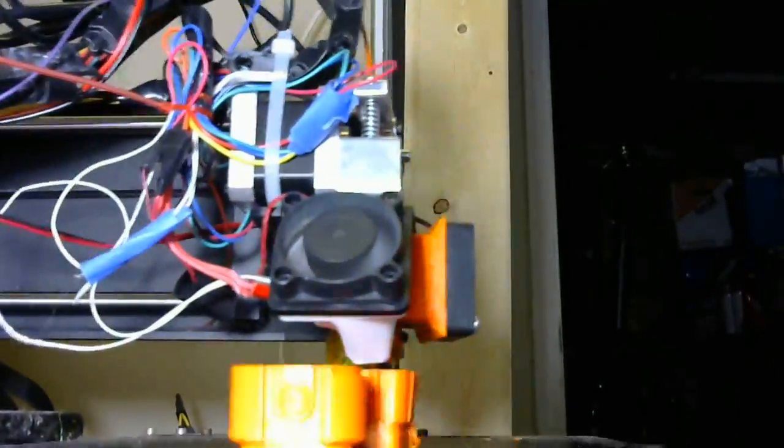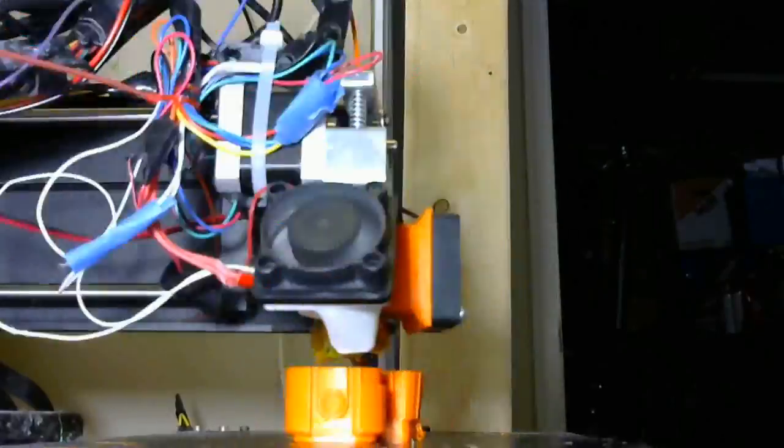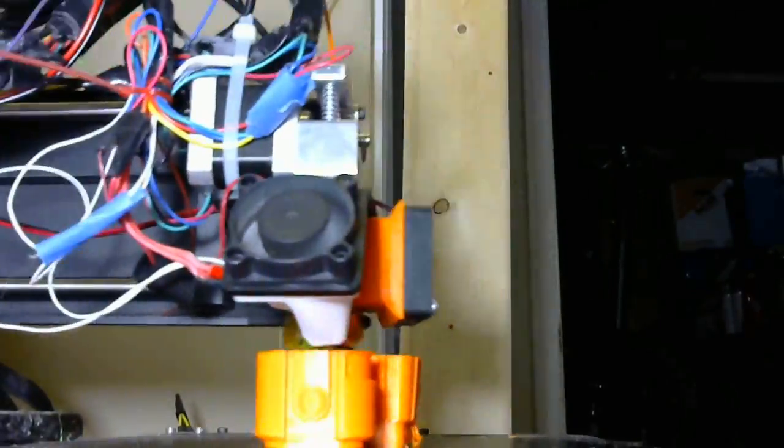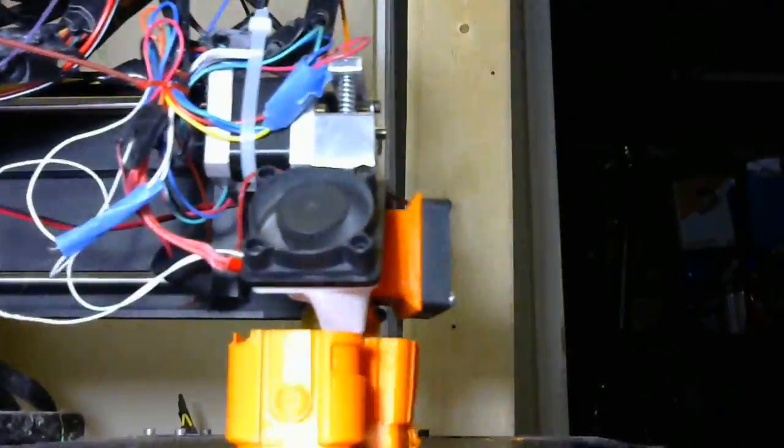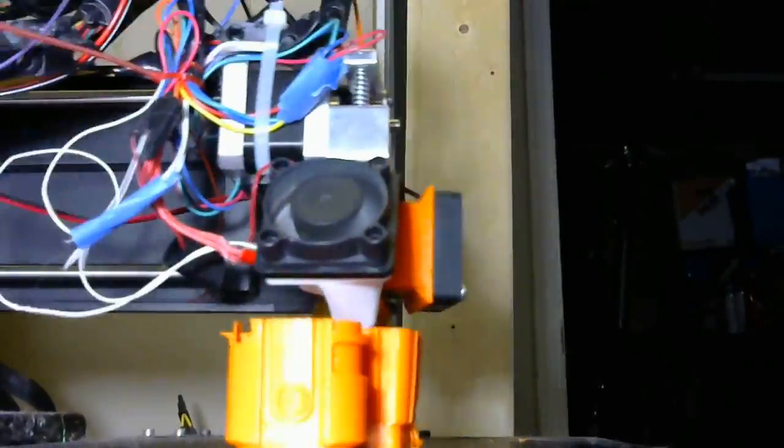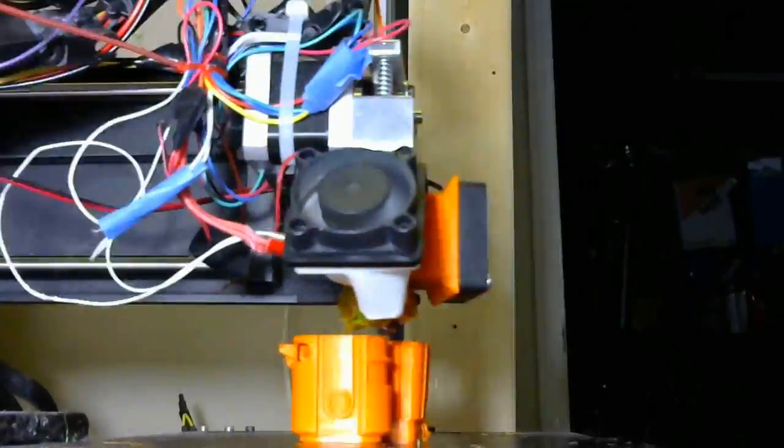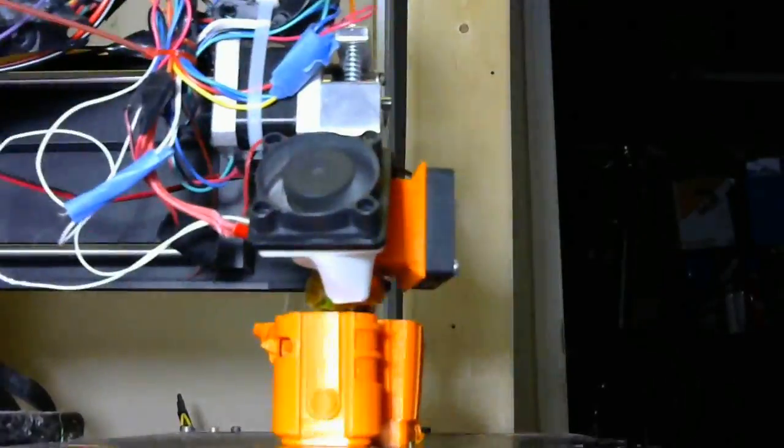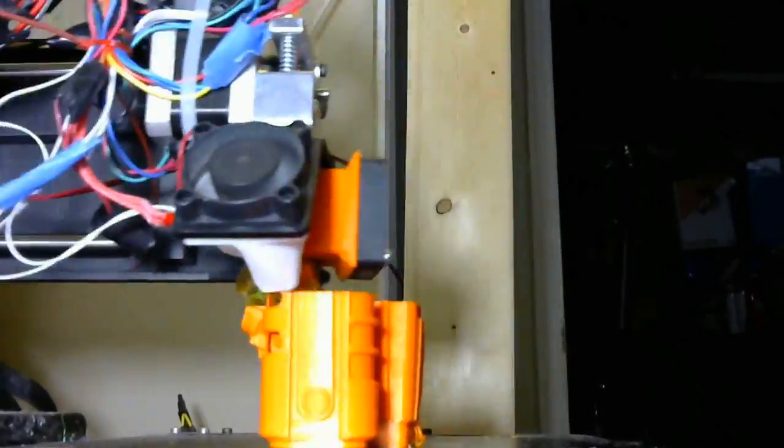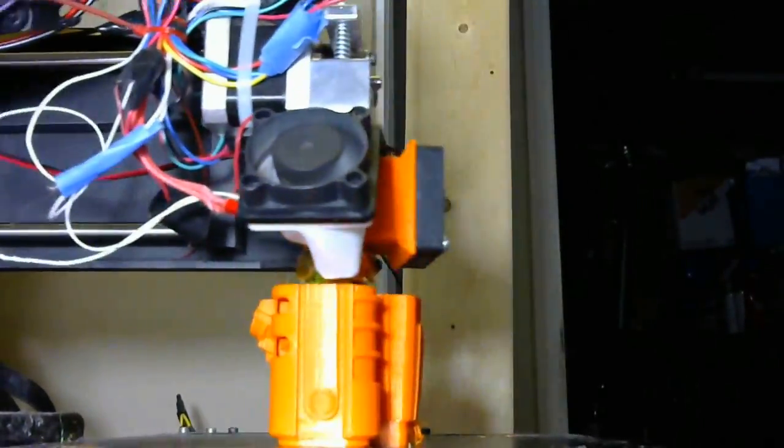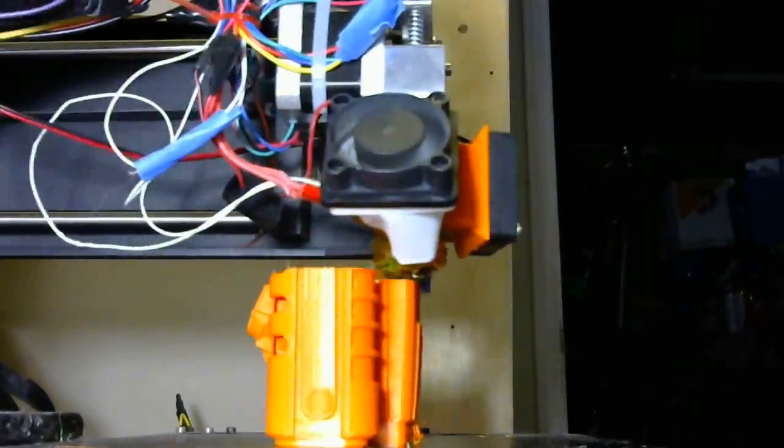So this model was printed on my PrinterBot Simple Metal. It was printed starting at 200 degrees Celsius and then brought down to 190 over the course of the first few layers, just to ensure that bed adhesion was good. The bed was heated up to about 65 degrees Celsius. It was printed in orange PLA from Filaments.ca, and it was printed at a layer height of 0.2 millimeters per layer.